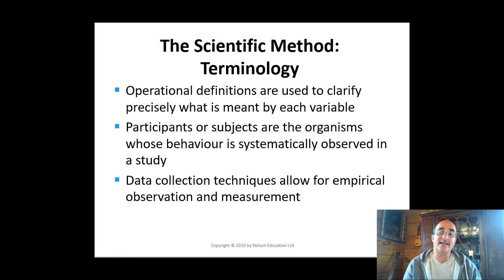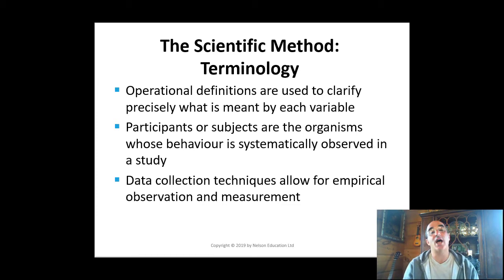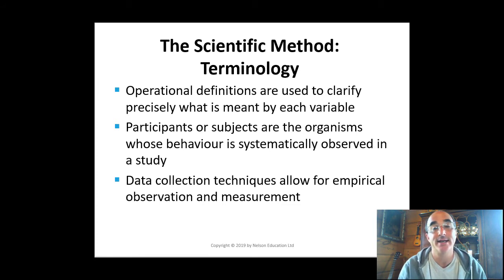They depend on statistics to analyze data and decide whether hypotheses are supported. Observations are converted into numbers, which are then compared. They share their findings through reports at scientific meetings and in scientific journals so others can evaluate new research findings and build new ideas. The scientific approach yields clarity in communication and more accurate and dependable information than, for example, using speculation.